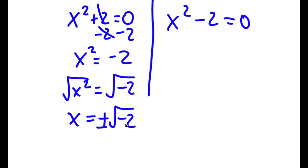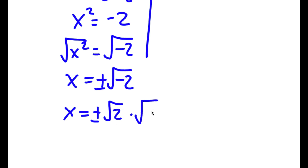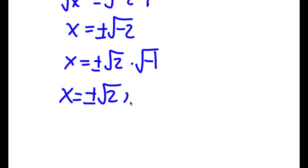And if you didn't already know, the square root of negative 2 can be rewritten as the square root of 2 times the square root of negative 1. And the square root of negative 1 is actually equal to the imaginary number i. So I get x is equal to positive or negative square root of 2 times i.